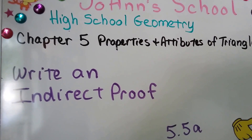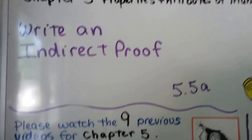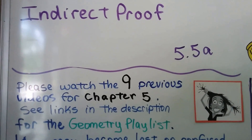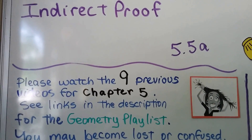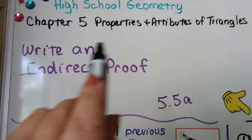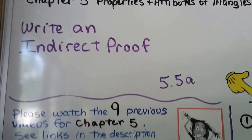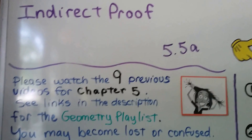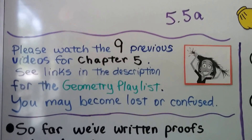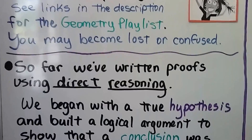Write an Indirect Proof. This is Lesson 5.5a. We're up to nine previous videos for Chapter 5 that talks all about properties and attributes of triangles. If you've missed any, go to the geometry playlist that's linked to this video.